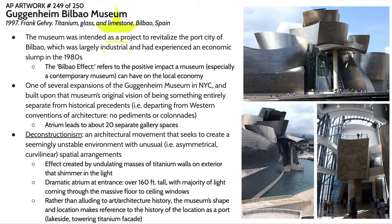We have two pieces of architecture in the global contemporary unit. This is the Guggenheim Museum in Bilbao, Spain. This museum was intended as a project to revitalize Bilbao, which was a port city that was extremely industrial, involved in steel work and seafaring trade. It experienced an economic slump in the 1980s after a recession. The museum was intended to revitalize the area and allude to some elements of the area's past while putting a contemporary spin on it.